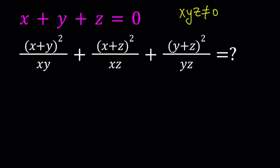So, since I know that x plus y plus z is equal to 0, this allows me to write x plus y equals negative z, x plus z as negative y, and y plus z as negative x. And then we can just go ahead and substitute.